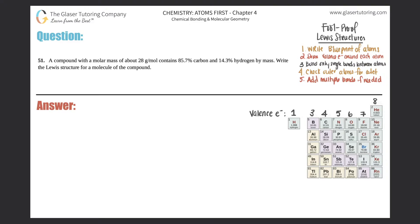Number 51: A compound with a molar mass of about 28 grams per mole contains 85.7% carbon and 14.3% hydrogen by mass. Write the Lewis structure for a molecule of the compound. Okay, now I think this one also was a one that got slipped in when they recreated the chemistry textbook for OpenStax.